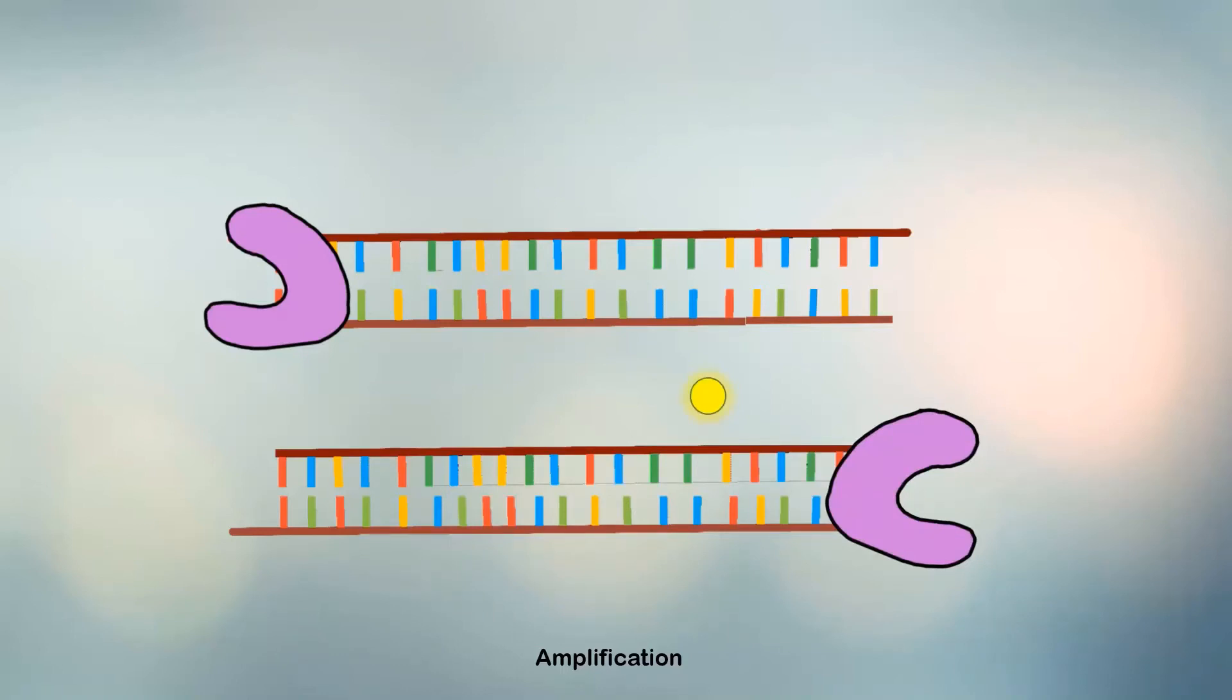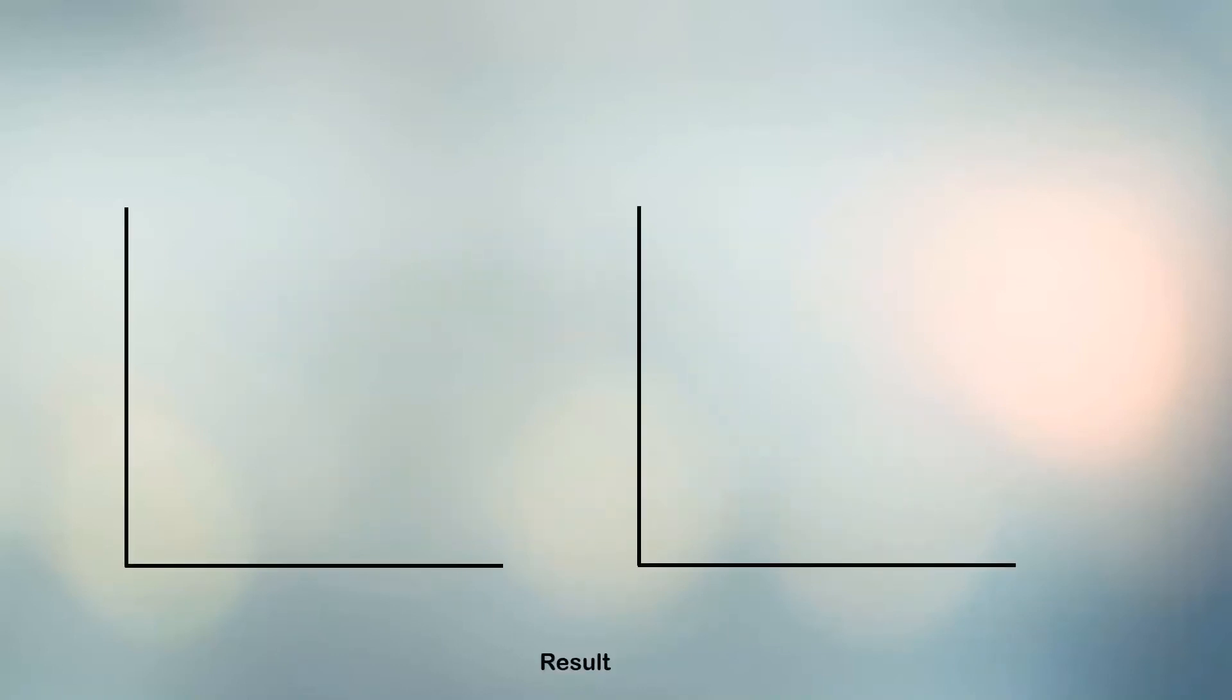The fluorescence signal increases as more copies of DNA are produced. If the fluorescence crosses a certain threshold, set above expected background levels, the test is positive.